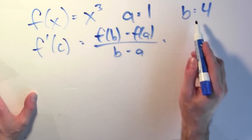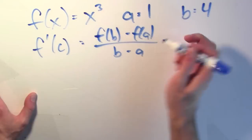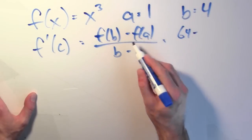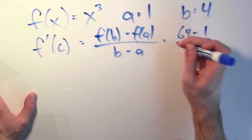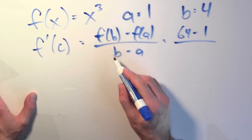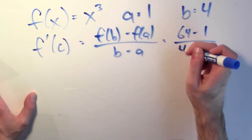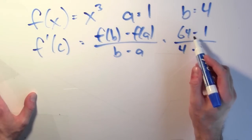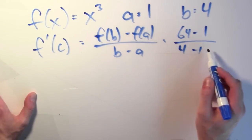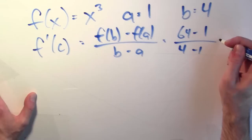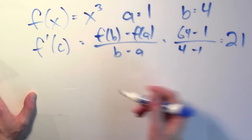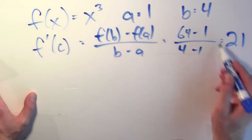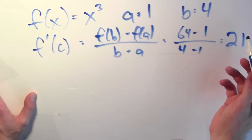In this case, f of b is 4 cubed, that's 64. f of a is 1 cubed, that's 1. And b minus a is 4 minus 1. This gives 63 over 3, which is 21. So I'm looking for a point c where the derivative is equal to 21.